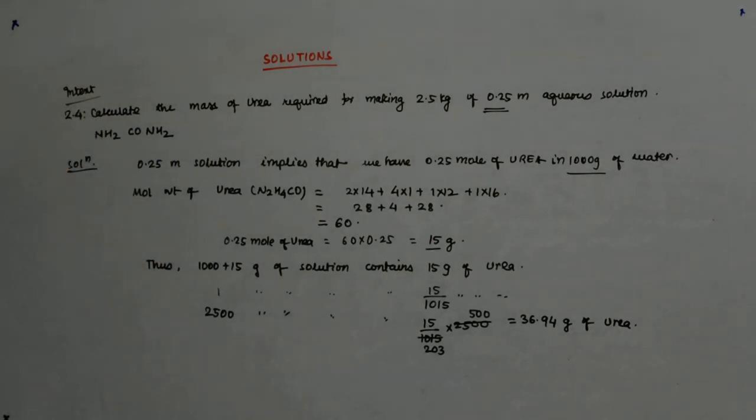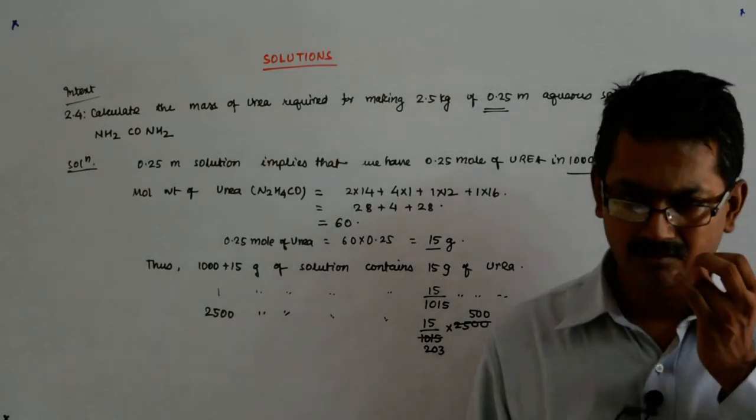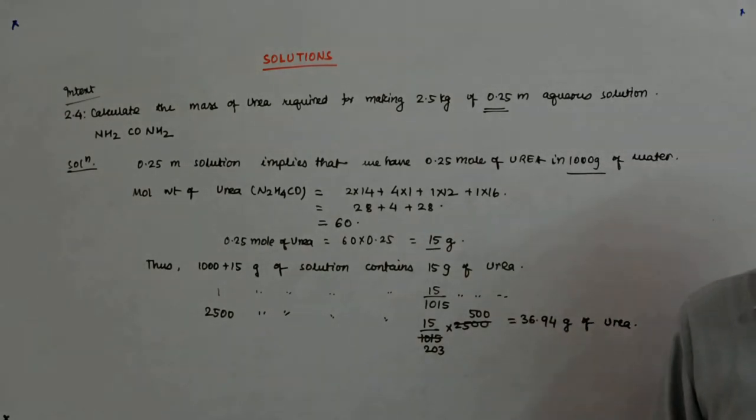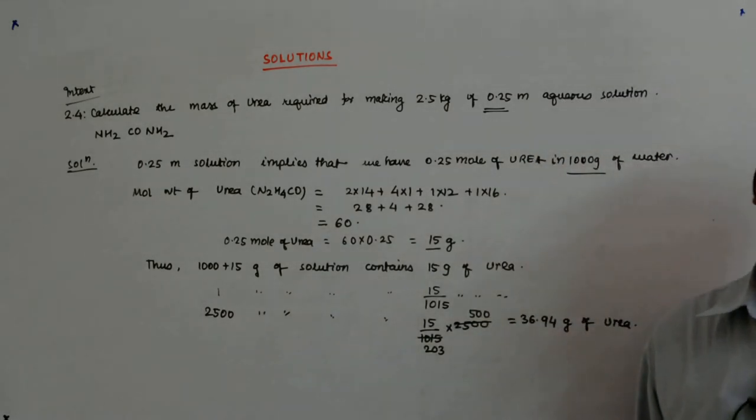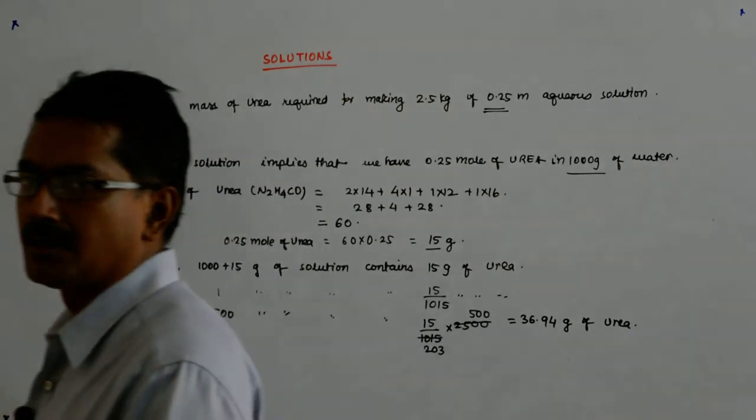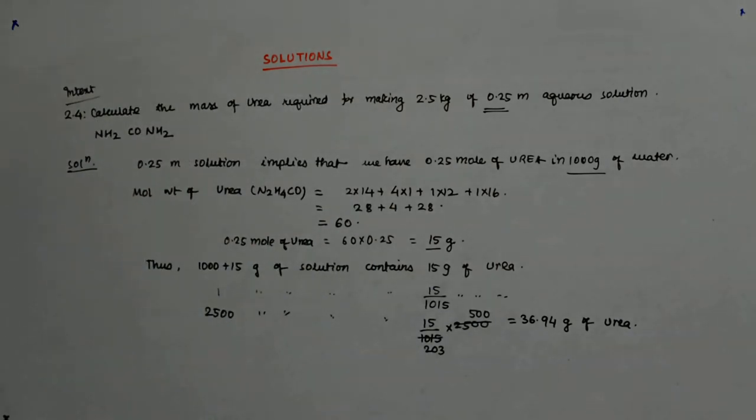It becomes pretty simple if you go by the unitary method and get a foothold somewhere. So your foothold is what? The foothold is just interpreting what that molal solution means. That's all. I have done nothing else.